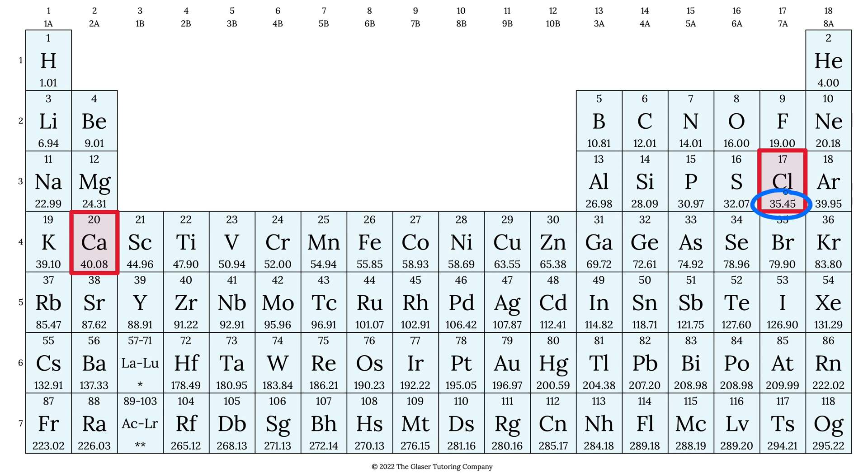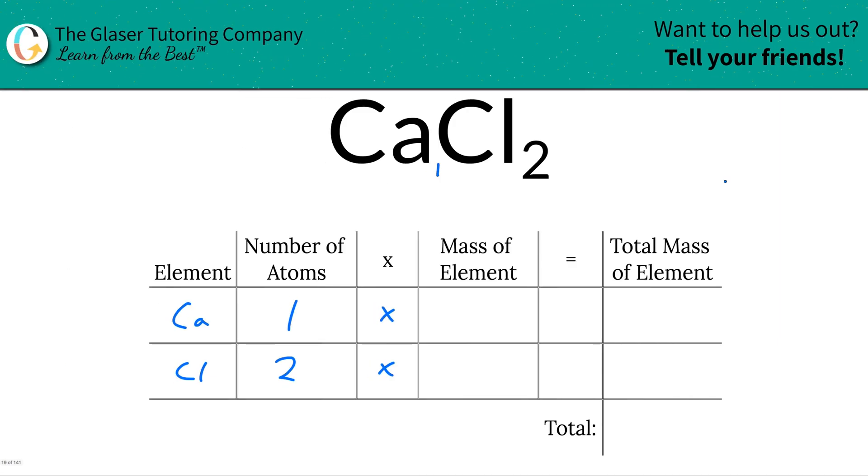Here's calcium's mass, 40.08. Here's chlorine's mass, 35.45. So let's simply plug that on in. So this is 40.08, this is 35.45.